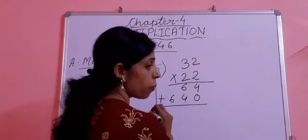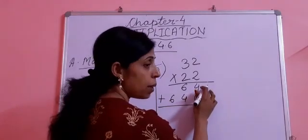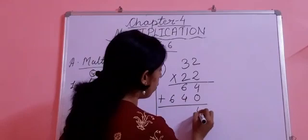Now we add the products. First, we add the one's place numbers: 4 plus 0, we get 4.